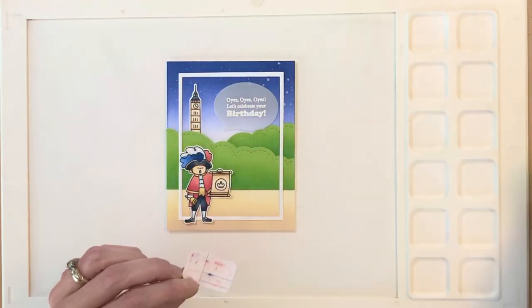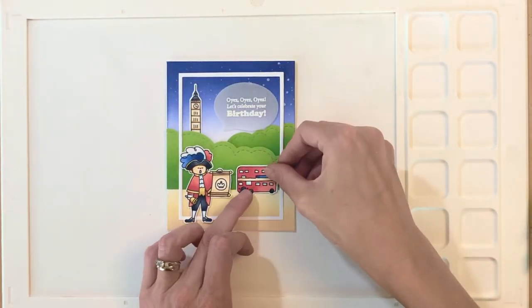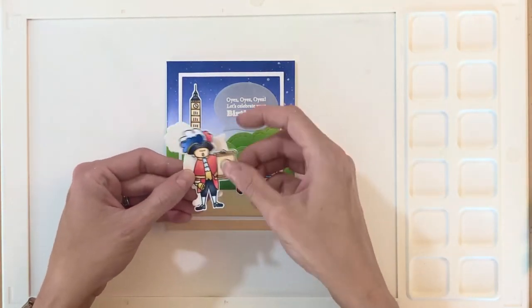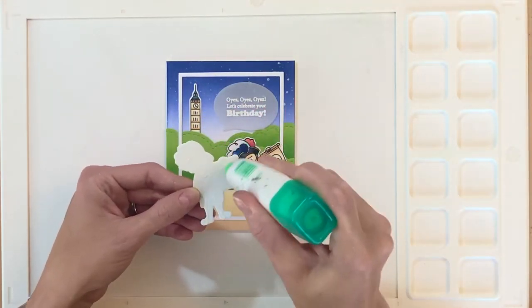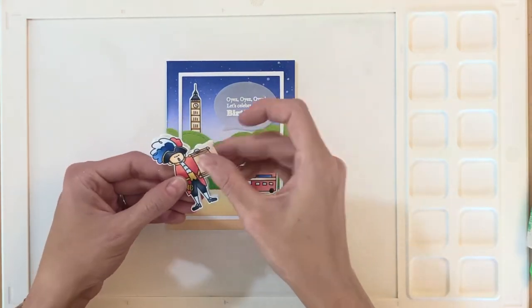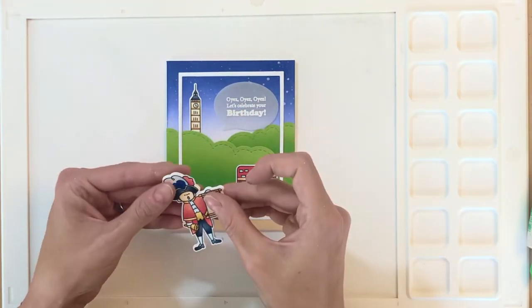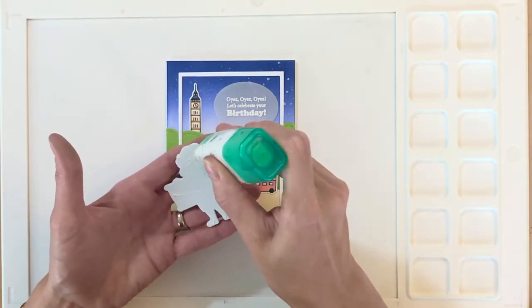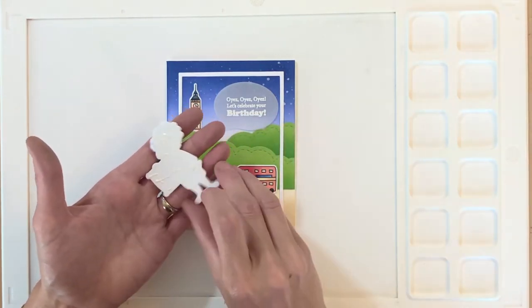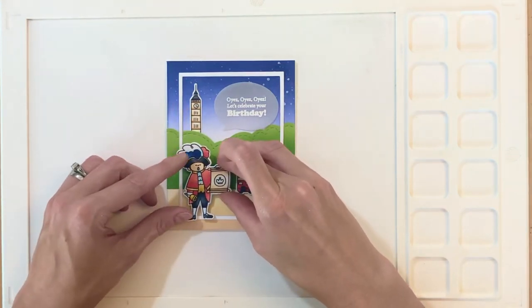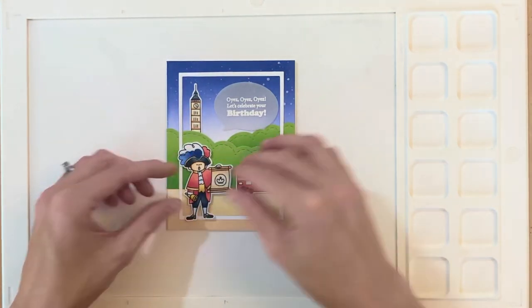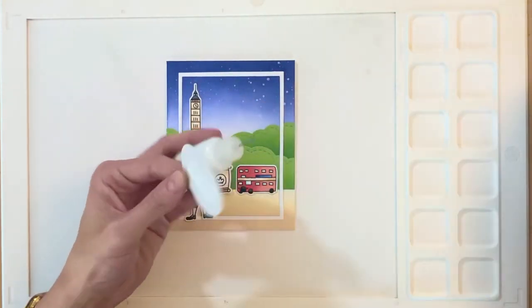I went ahead and kind of arranged the rest of my images and now I'm just going to glue them down starting with that double-decker bus. And then I also die cut some craft foam for the town crier. This will just make that town crier have a little dimension. Yes, the craft foam is not completely covering the town crier because of that additional feather that I added, but for the most part he's covered with that craft foam and he has that support and no one will really notice that little part of his feather that doesn't have it.